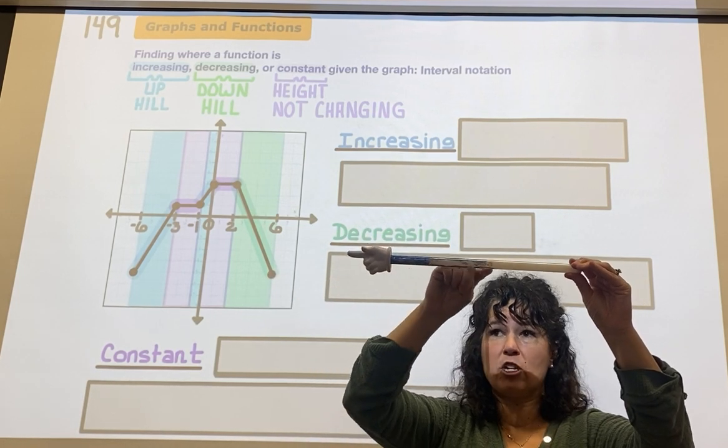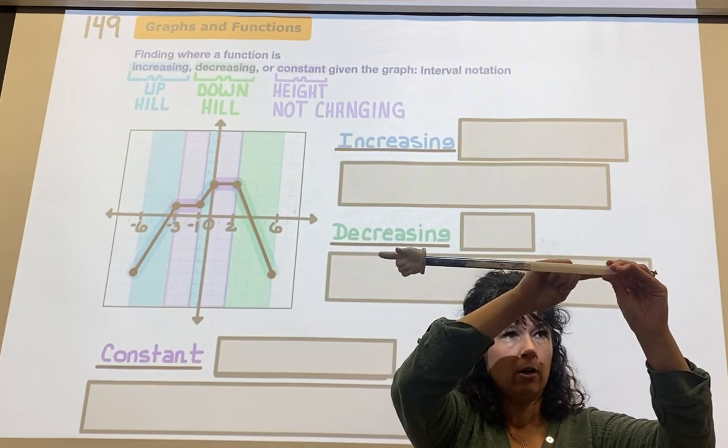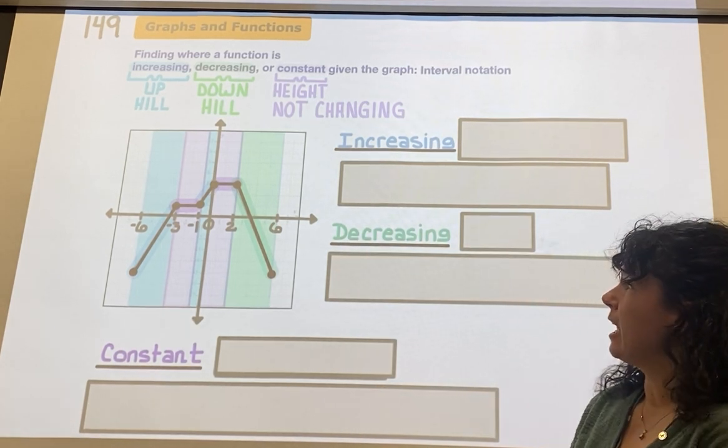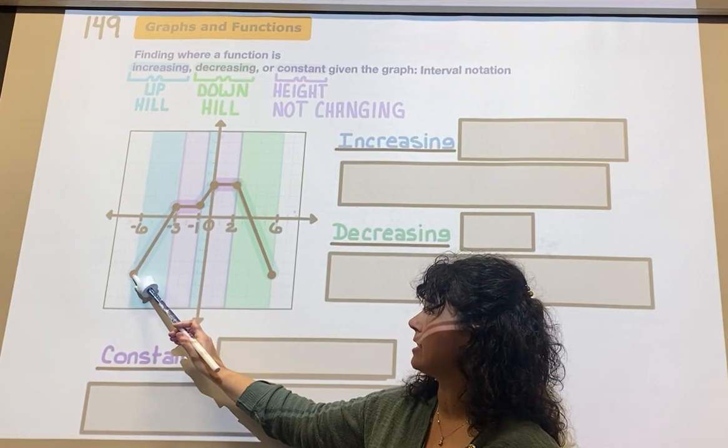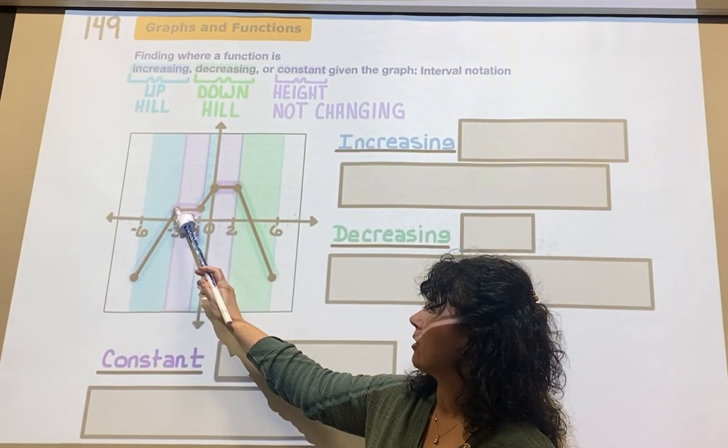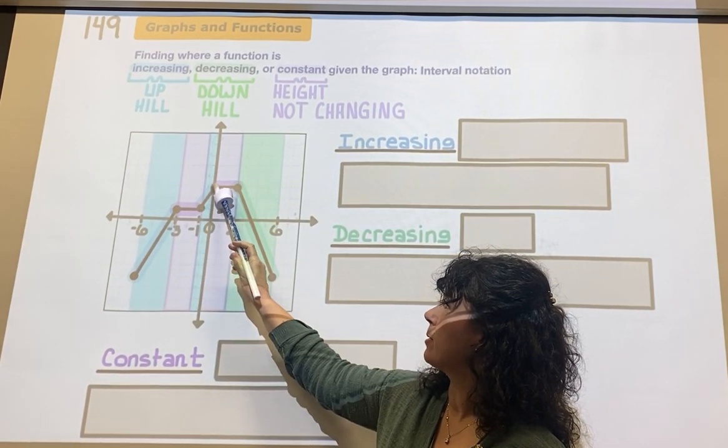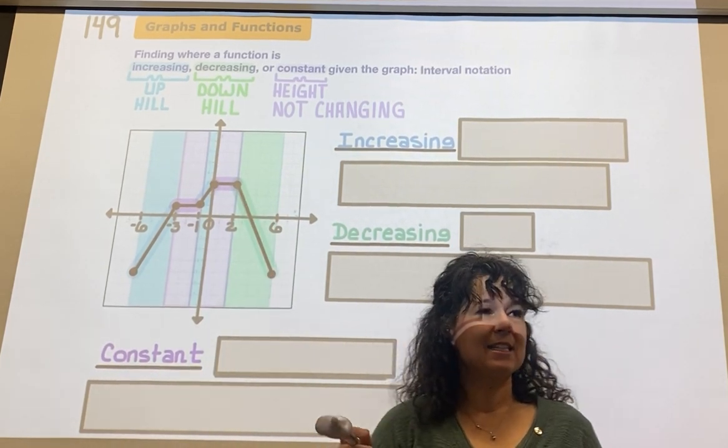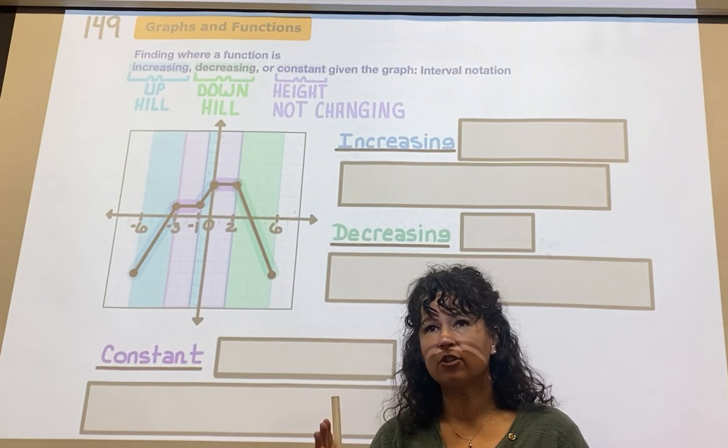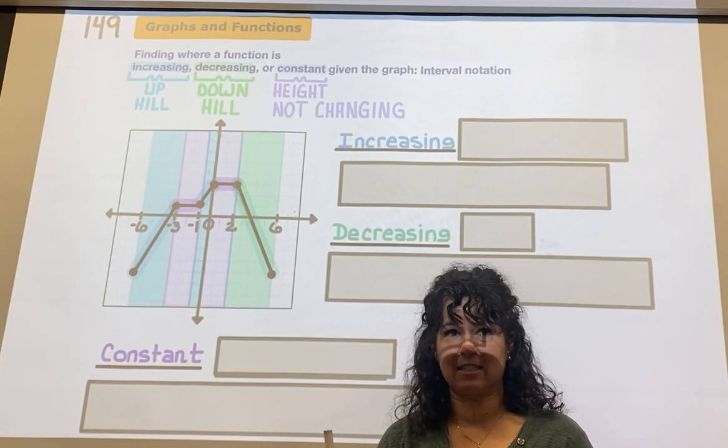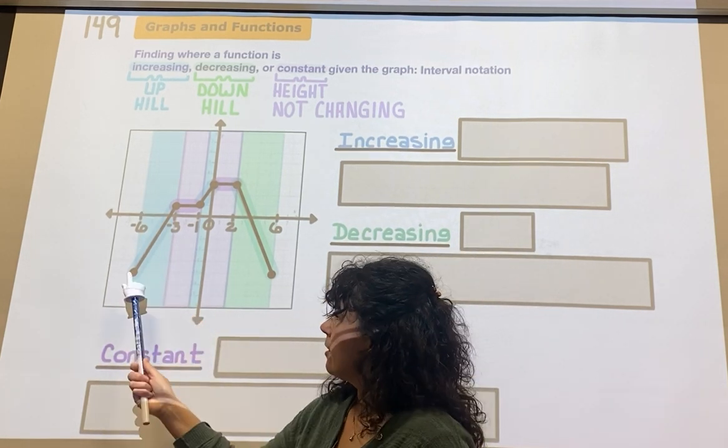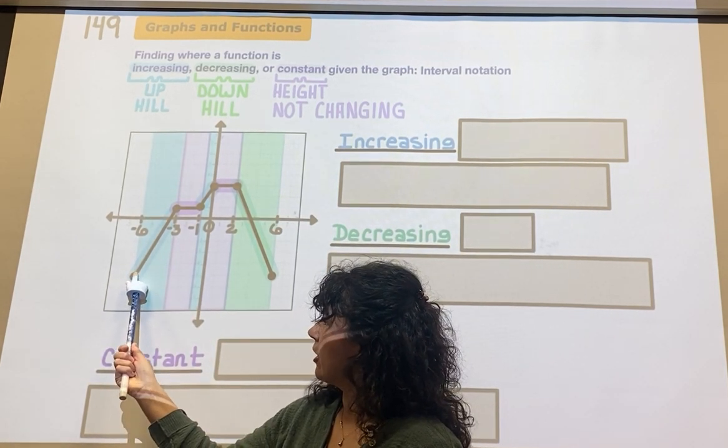If I go straight across, it means a constant height - my height is not changing. Here's constant. Now I pre-highlighted this graph. The graph has a solid dot, goes across, goes up, goes across, and goes down. I highlighted sections because your answers come off of the x-axis, they're not coordinates.